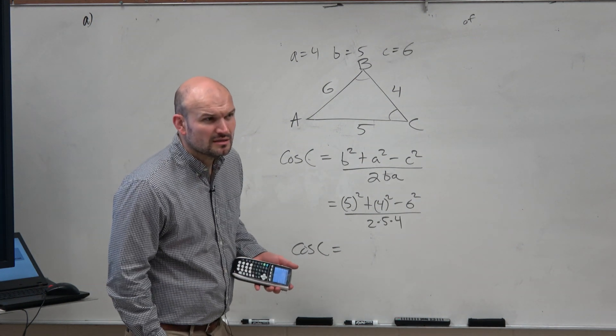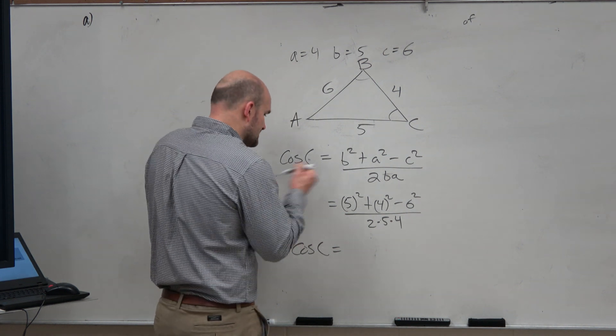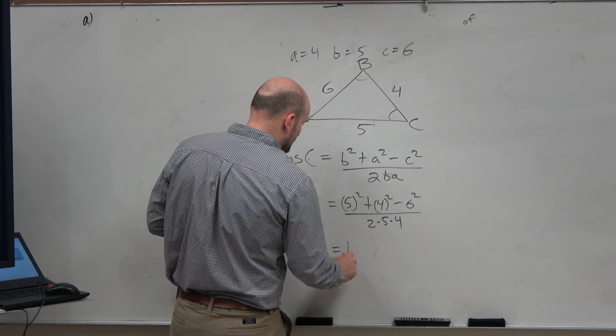So we have 5 and then divided by 40 equals 0.125. Is that our angle? No, right? Don't say, oh, 0.125, that's your angle. No, it's the cosine of C is 0.125.